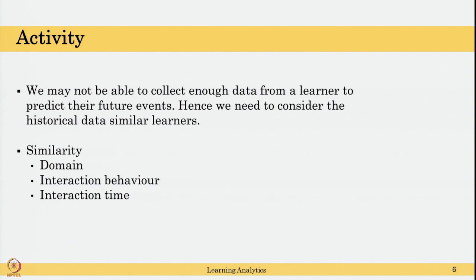Also, the interaction time should be similar — it should not be the case that in one year students interacted with the system for only 30 minutes, while in the next year students interact for over an hour. Make sure you have the same domain, similar types of interactions, and similar interaction time. The data collection should also be similar, unless your research question specifically requires collecting additional new data.